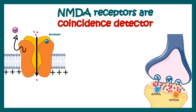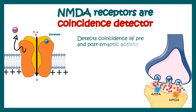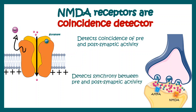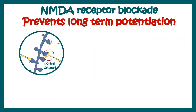NMDA receptors are known as coincidence detectors — they detect the coincidence between pre- and postsynaptic activity, and they detect the synchrony between pre- and post-synapse. NMDA receptor blockade has been shown to block potentiation. So what is potentiation? In a normal synapse, you can record from the postsynapse and stimulate the presynapse and observe a postsynaptic potential.